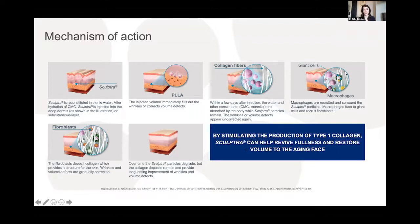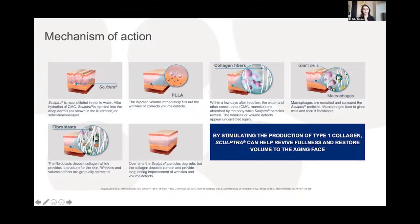After reconstitution with water, Sculptra is injected into the deep dermis or subcutaneous layer. The injected volume immediately fills wrinkles or volume defects. Within a few days, water, CMC, and mannitol are absorbed, but the PLLA particles remain. Macrophages are then recruited, surround the particles, fuse into giant cells, recruit fibroblasts, and deposit collagen. Over time, PLLA breaks down through non-enzymatic hydrolysis to lactic acid monomers, which are metabolized to carbon dioxide and water.